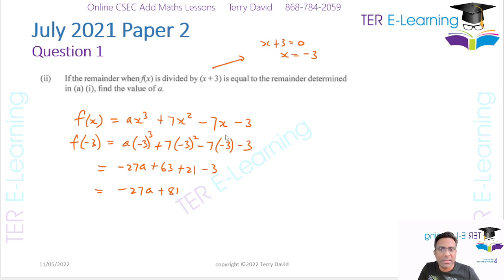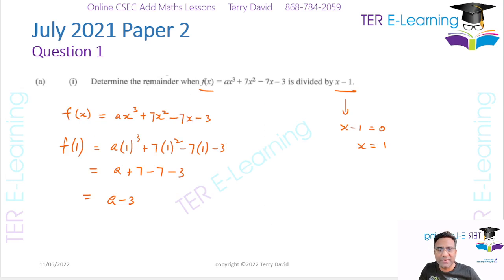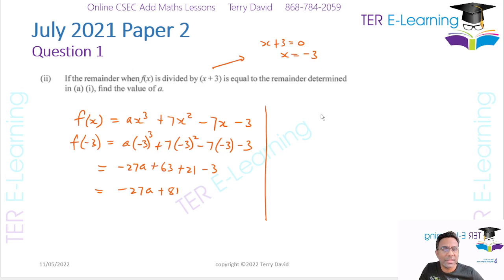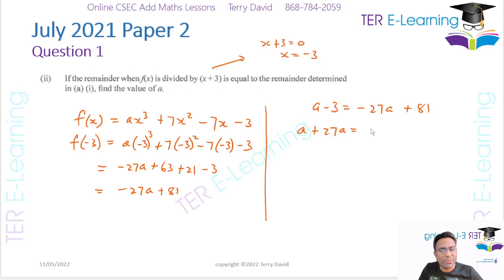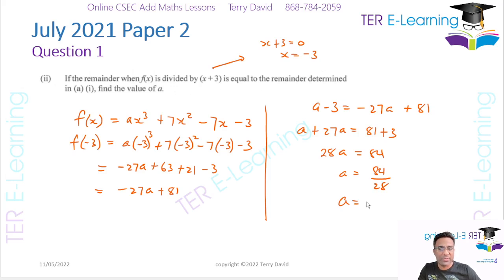They tell us this remainder equals the remainder we just got. So we set a minus 3 equal to minus 27a plus 81. Bringing all the a's to one side: a plus 27a equals 81 plus 3, so 28a equals 84. Therefore a equals 84 over 28, which gives a equals 3.